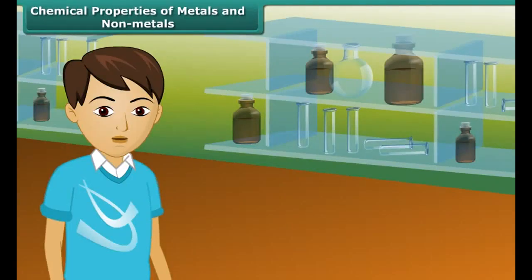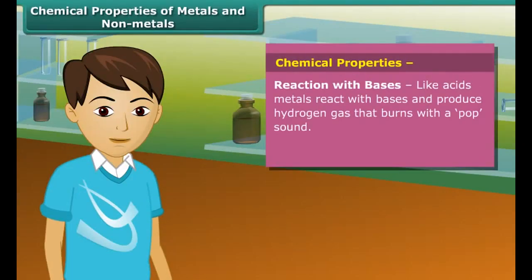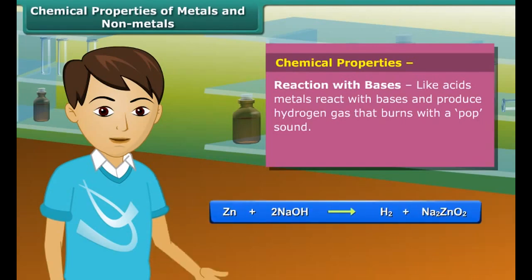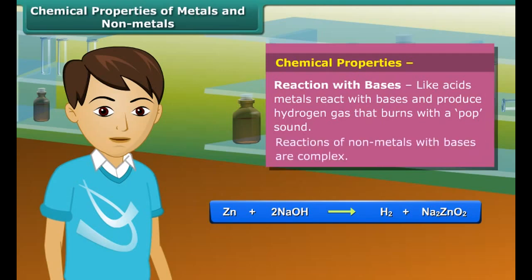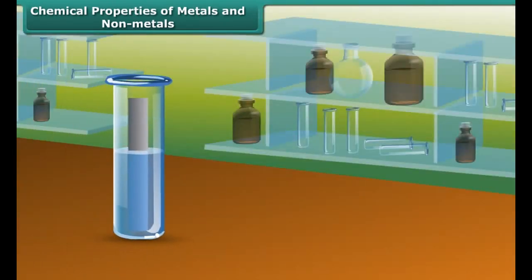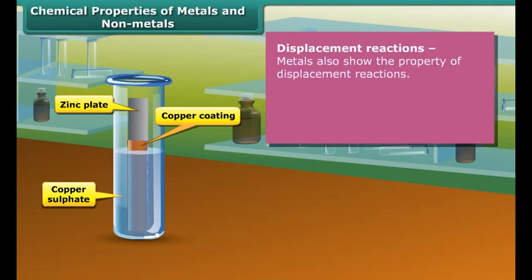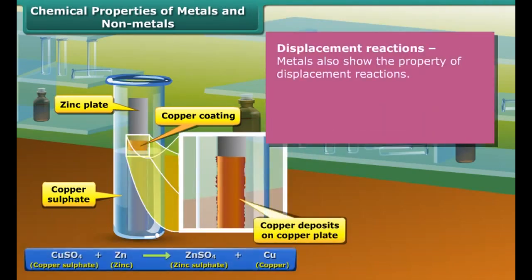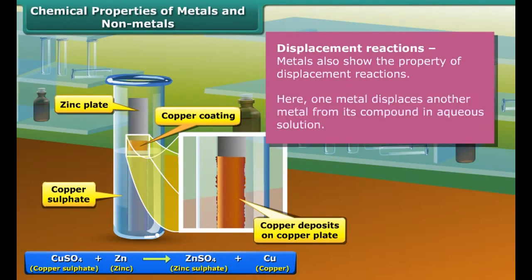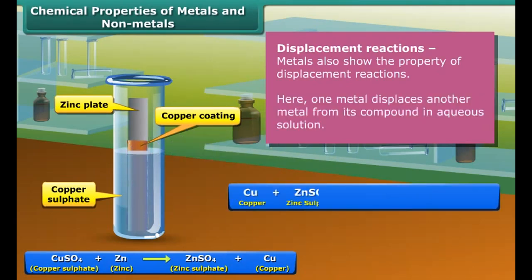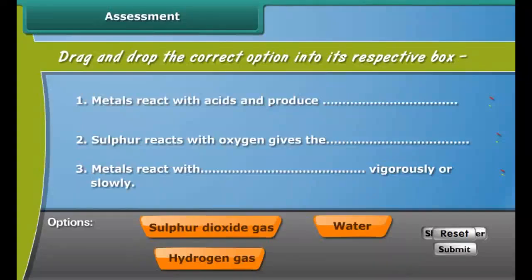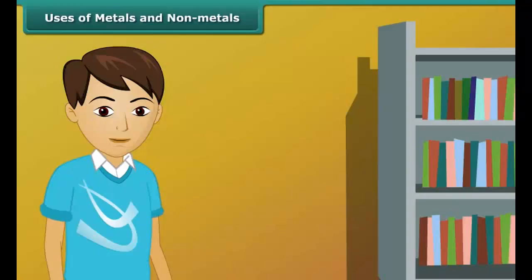You will be surprised to know that, like acids, metals also react with bases and produce hydrogen gas, while non-metals react with bases in a more complex way. Metals also show the property of displacement reactions, where one metal displaces another metal from its compound. Let's check your understanding with a drag-and-drop activity.